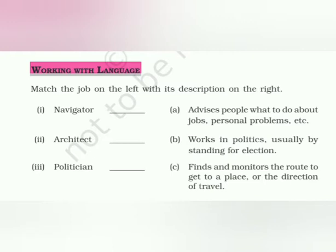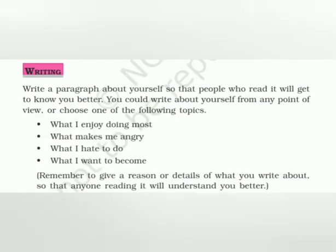That is what a navigator does. In the same way, you find the answers to 2 to 10. The last one is journalist, which is on the next page, page 77. Against the descriptions you write the numbers — so for number C, you write 1 there. This is on page 77.